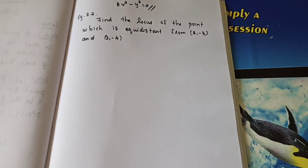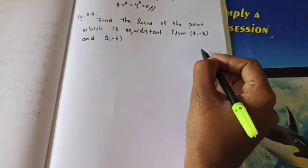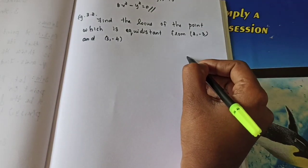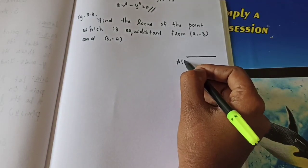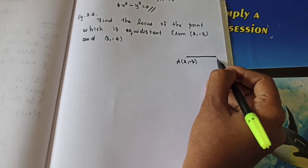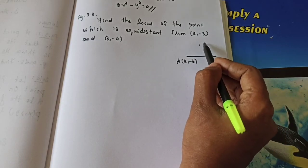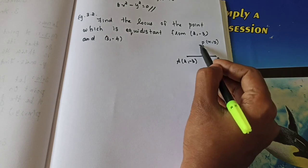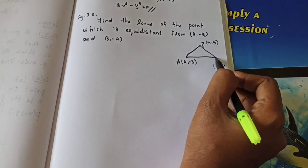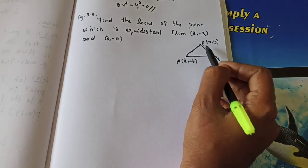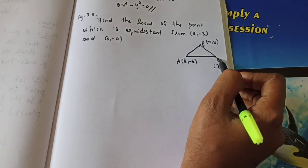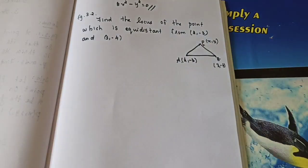Example 3.2: Find the locus of a point which is equidistant from two points. A point is equidistant means PA must be equal to PB — that is the condition given. According to that condition, use the distance formula and you will get the answer.